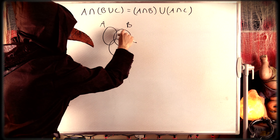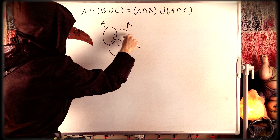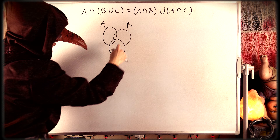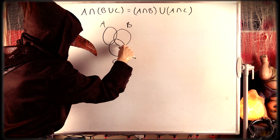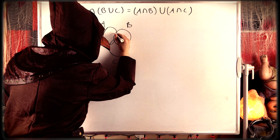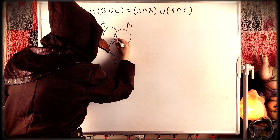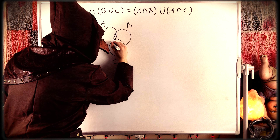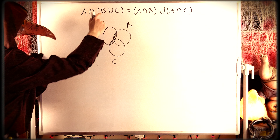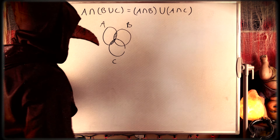If we take what is in common with B union C and A — that intersection — we just take what's in common with A. That's all of this stuff I'm shading now. So that's A intersect B union C.